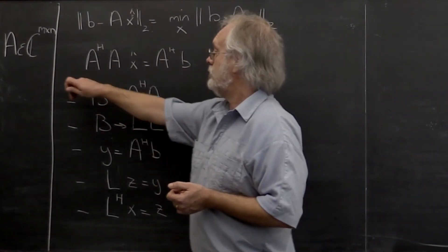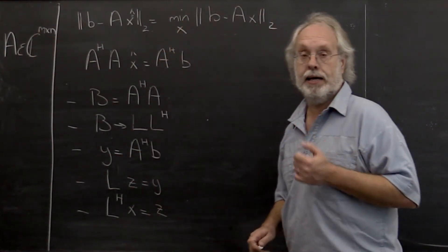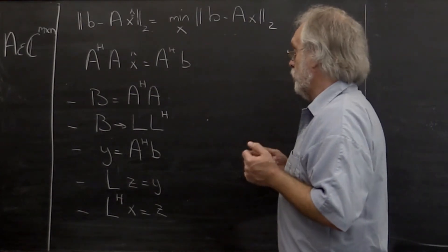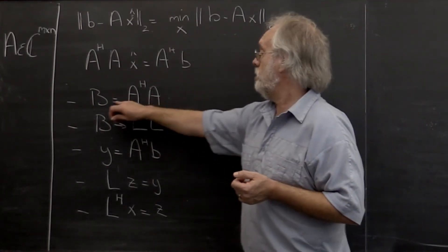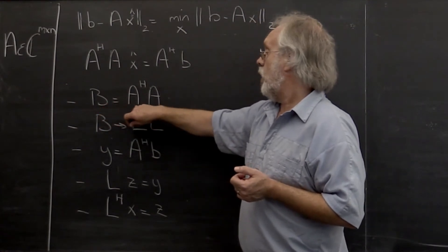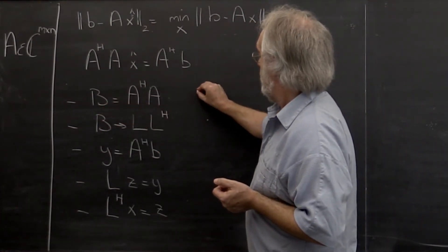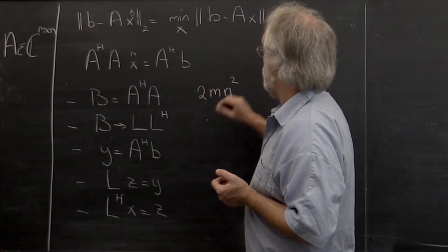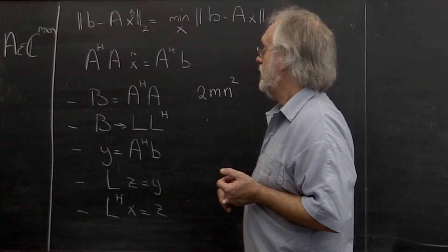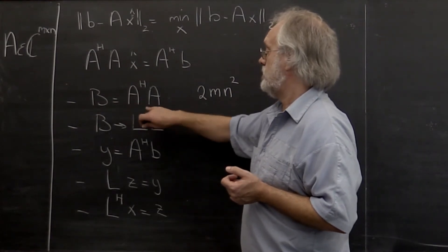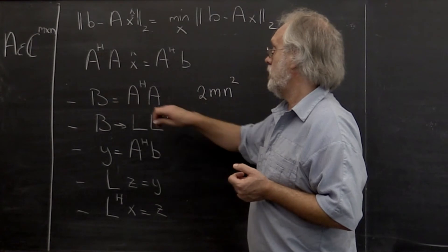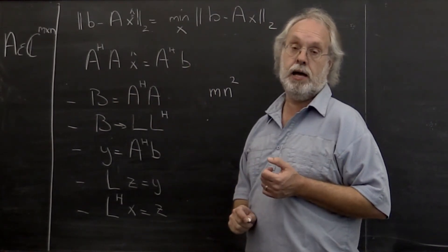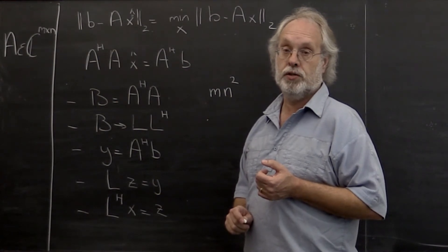Now if our matrix is n by n and we count a multiply and an add as one floating point operation each, then computing B requires a matrix-matrix multiply that requires 2mn² floating point operations. Except that this matrix is Hermitian, and therefore you only need to compute half of it, so it's roughly mn² floating point computations.